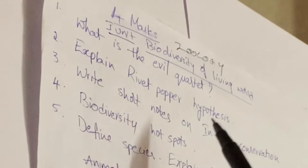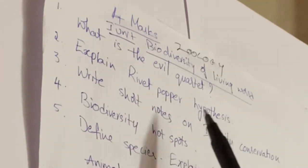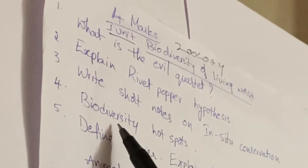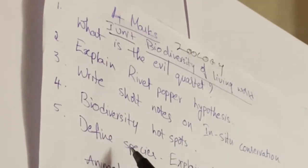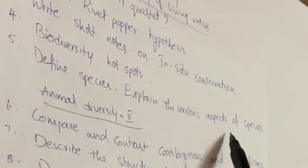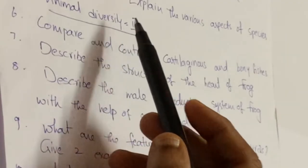Explain rivet popper hypothesis. The third one is write short notes on in-situ conservation and biodiversity hotspots. The fifth one: define species and explain the various aspects of species.